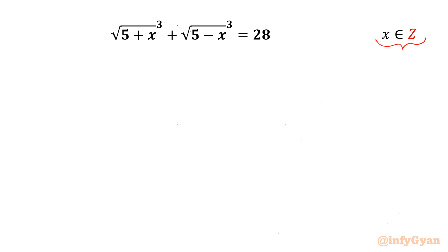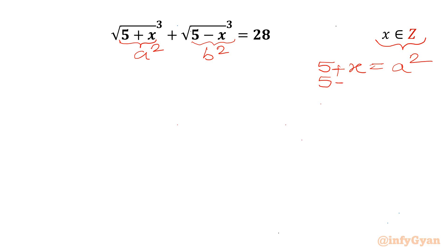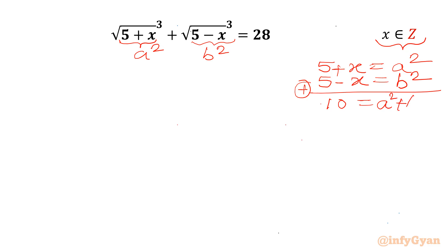Let's get started with our substitution. I will call 5 plus x equal to a squared, and I will consider 5 minus x equal to b squared. Once I add both equations I can get 10 equal to a squared plus b squared.